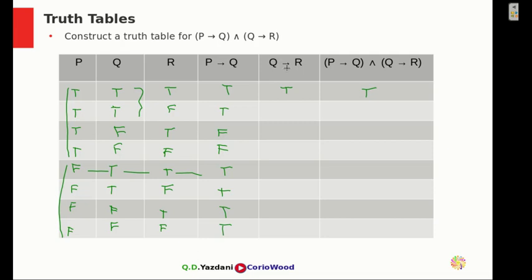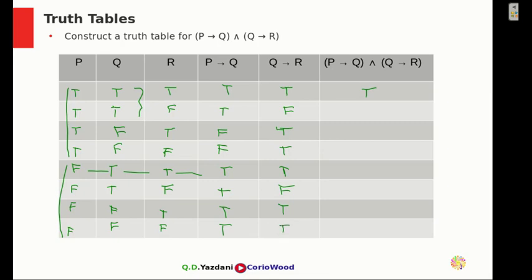Now for Q implies R: Q is T and R is T — that's true. Q is T and R is F — that becomes false. For the third row, Q is false and R is true — false implies true is true. False and false also becomes true. Then true and true is true; true and false is false; false and true is true; and false implies false is true.